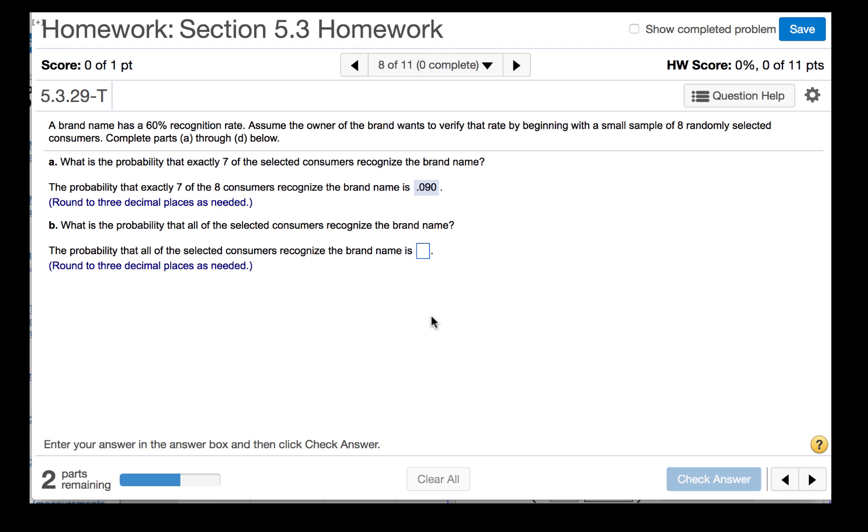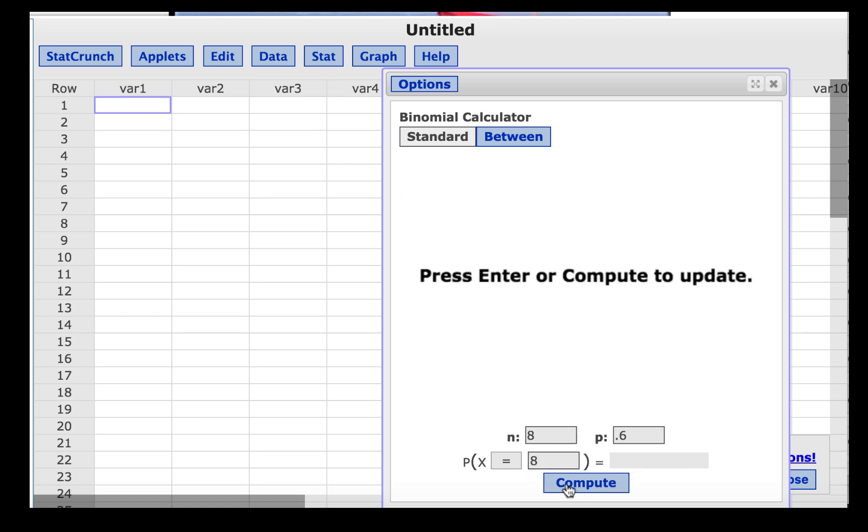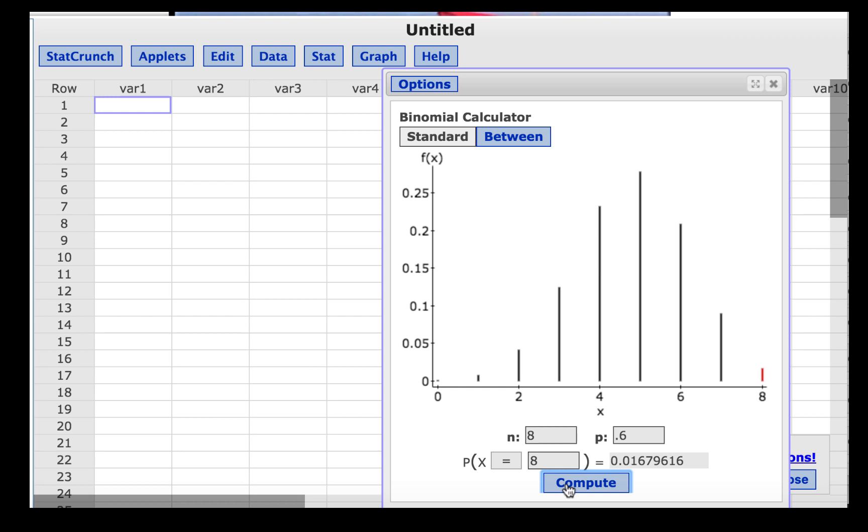What is the probability that all of the selected consumers recognize the brand name? In other words, we are to find the probability that X is equal to 8. So we will change the number of successes to 8 and click Compute. And we find this probability to be 0.017.